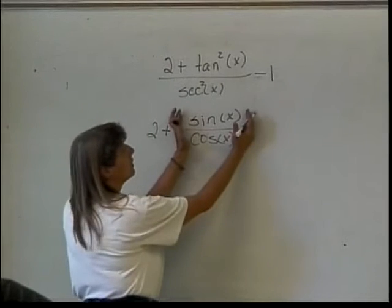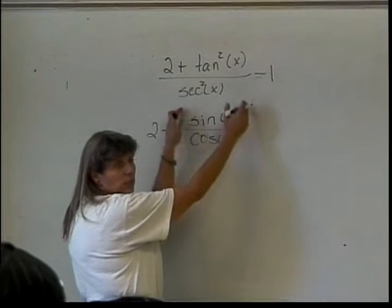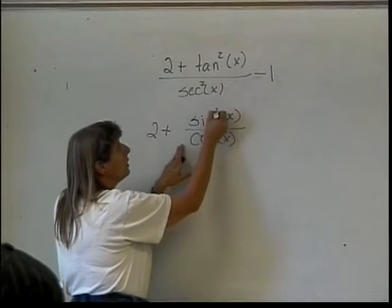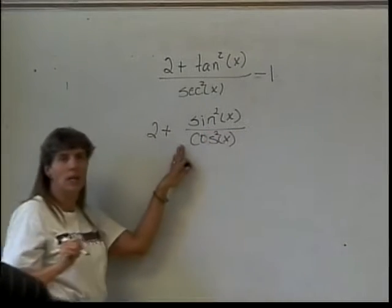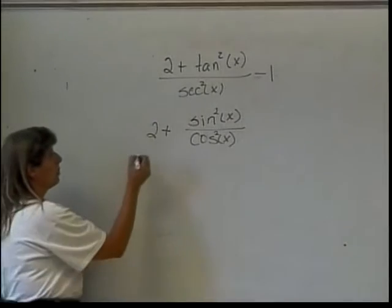I either have the option of squaring the whole thing, or if I square a fraction, it's the same thing as squaring the numerator and also squaring the denominator. Usually, it's easier if we do it that way, in terms of making things simpler. So, I square my numerator and I square my denominator.